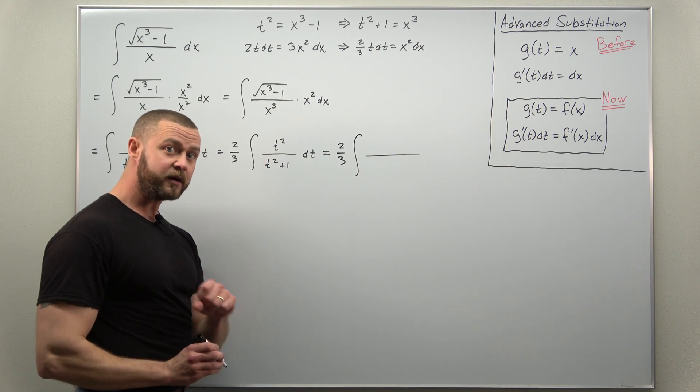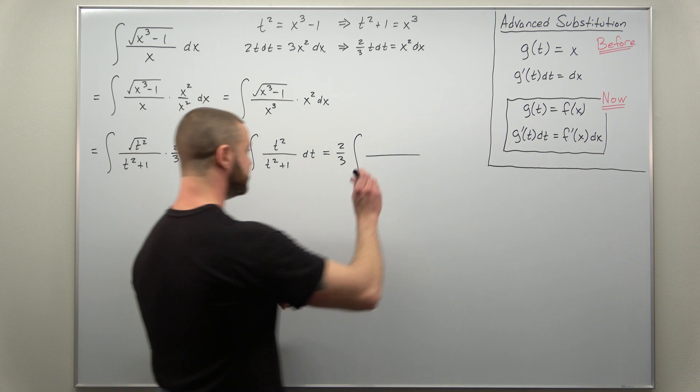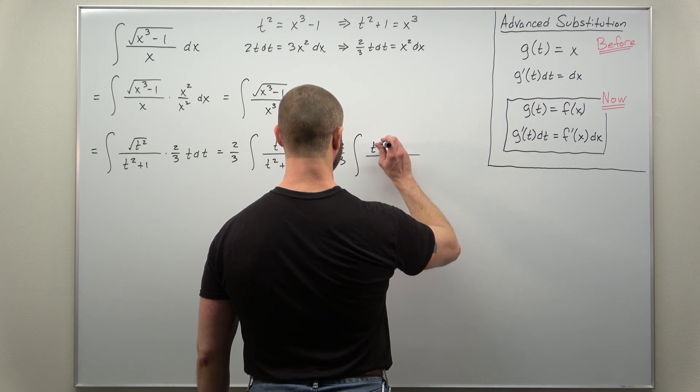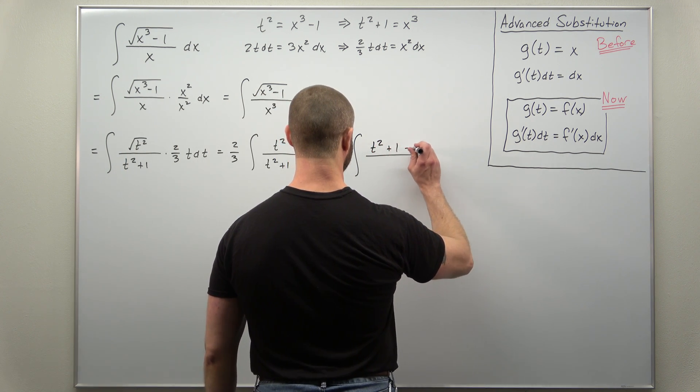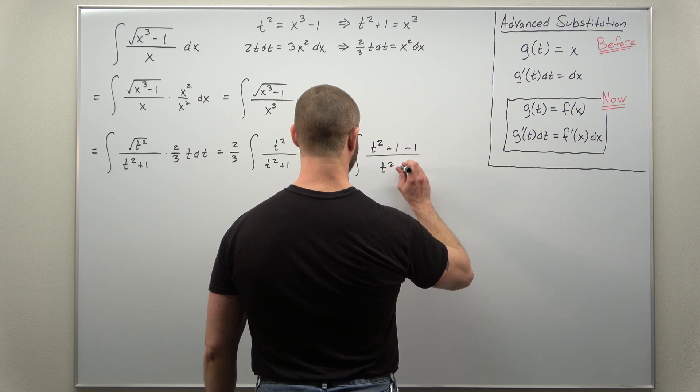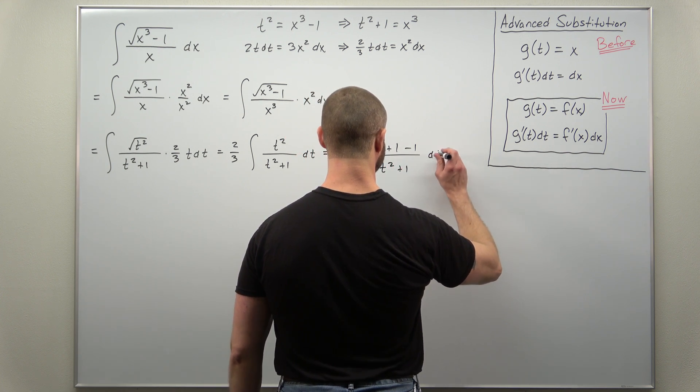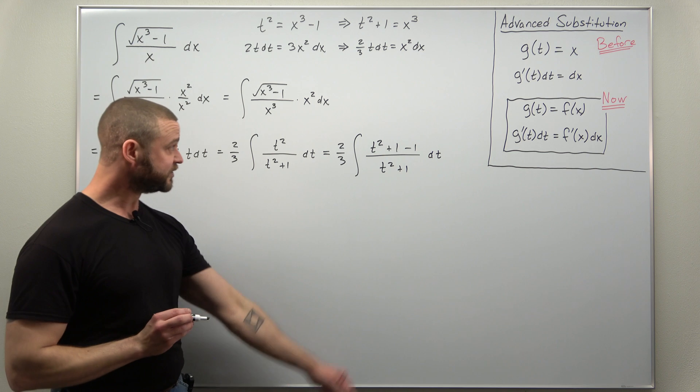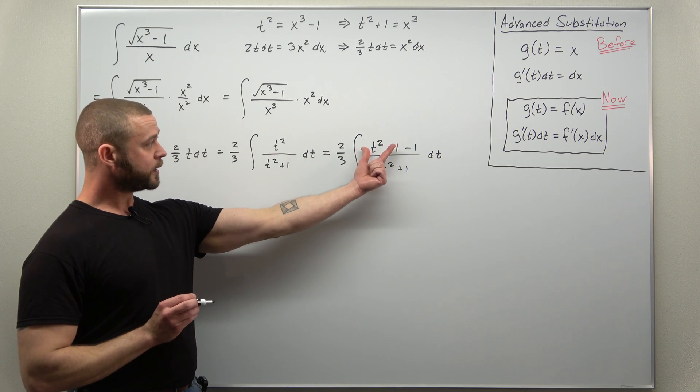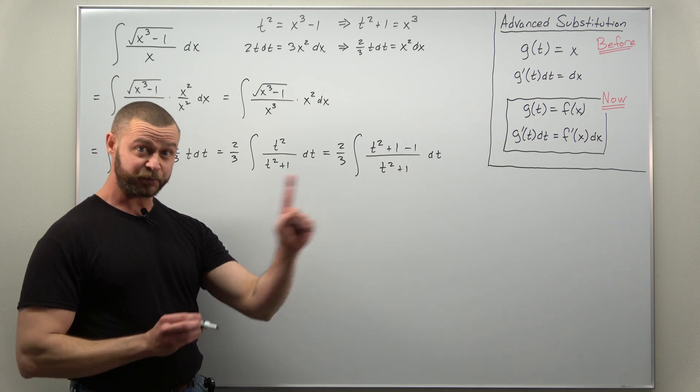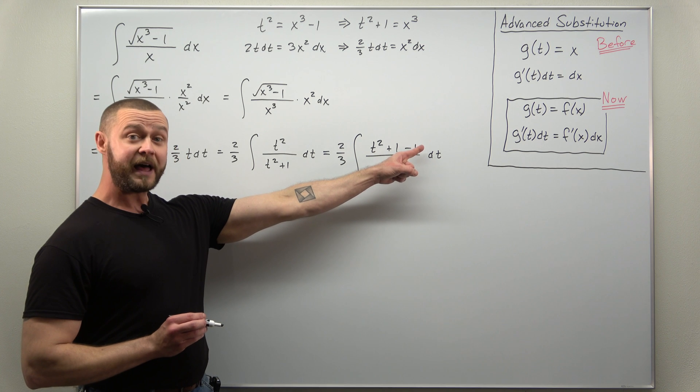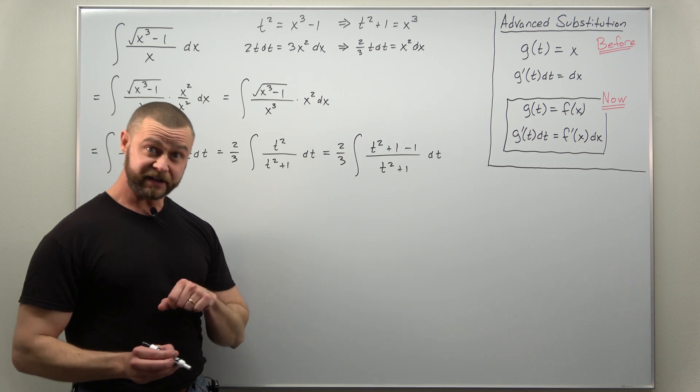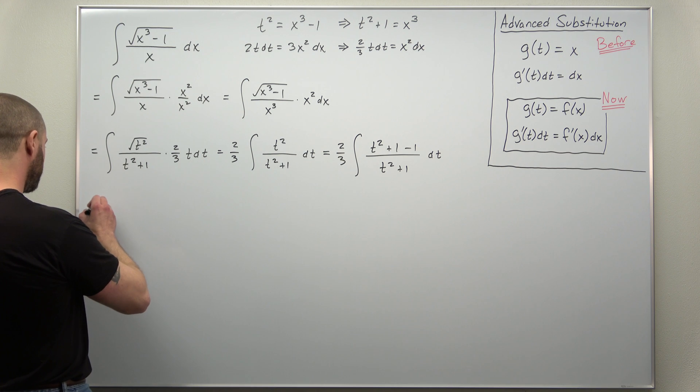So we'll take t squared add 1 and then immediately subtract 1. And notice if we split this up, t squared plus 1 divided by t squared plus 1 that cancels. And then we'll have minus 1 divided by t squared plus 1. So let's write that out.